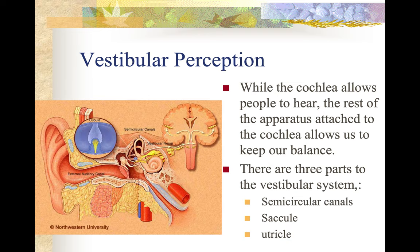While the cochlea allows people to hear, the rest of the apparatus attached to the cochlea allows us to keep our balance. There are three parts to the vestibular system. When keeping your balance, think of a roller coaster and why they're so much fun — people get sensations they very rarely get, like being turned upside down or going fast around a sharp turn. The vestibular system is suddenly activated. If you've ever been in a helicopter, it's about the same thing.